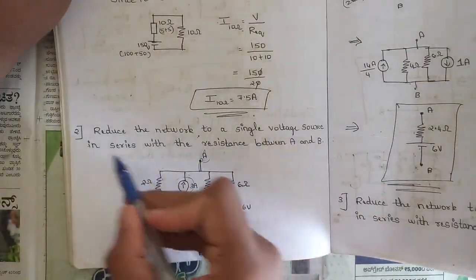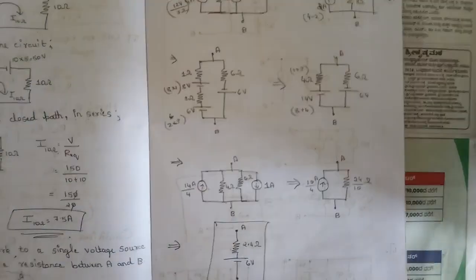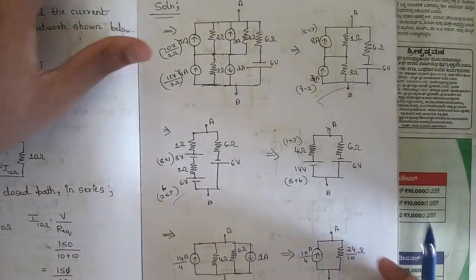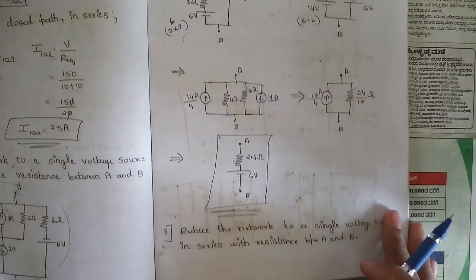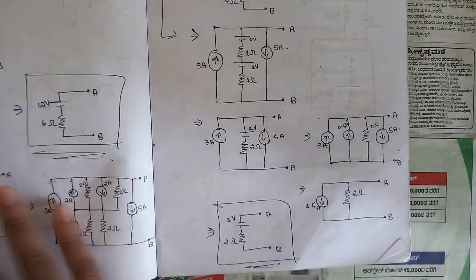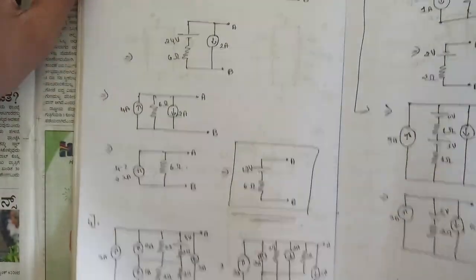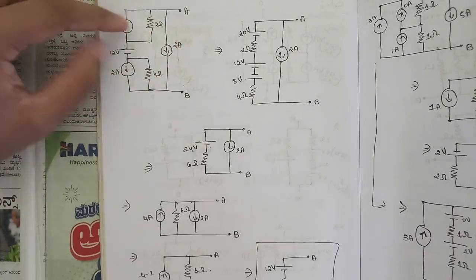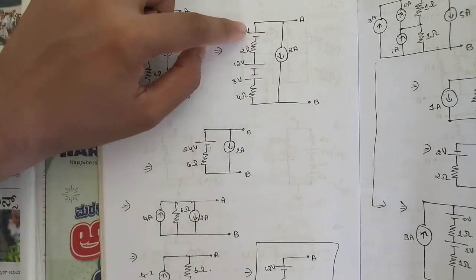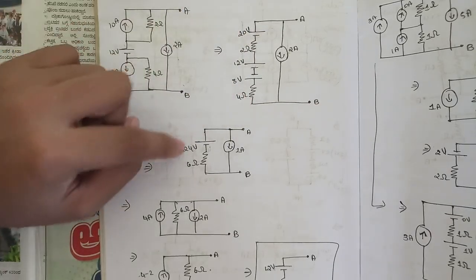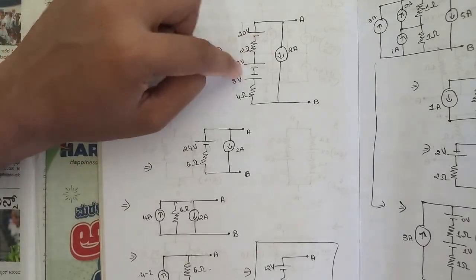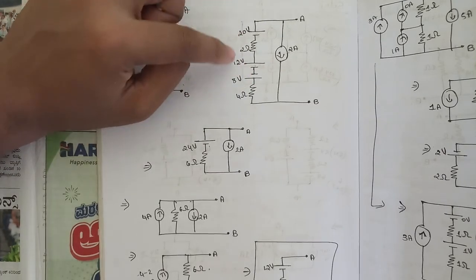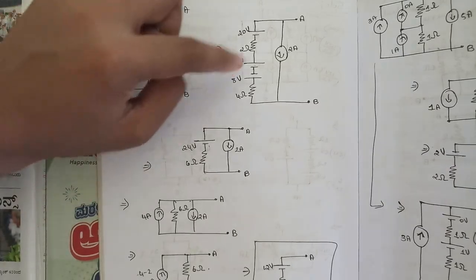Here are some problems — please note down all the steps and try to solve them on your own. In this example, the two current sources in parallel with resistance are converted to voltage sources in series with resistance. The voltage sources are added or subtracted based on direction: 20 plus 12 is 32, and 32 minus 8 is 24, since the 8-volt source is in the opposite direction.